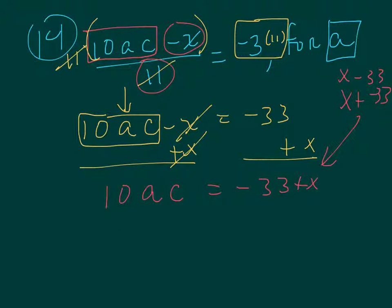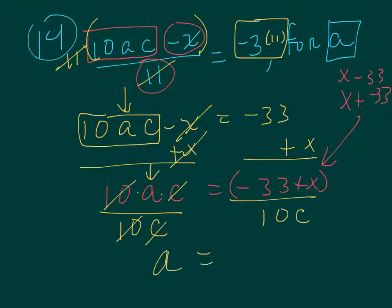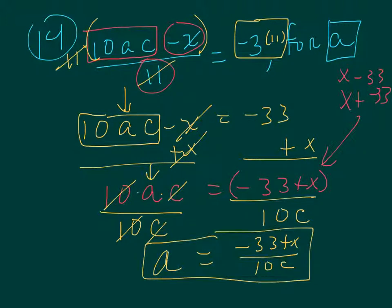All right, now this is attached, so the next thing I'm going to do is—this is multiplication—so I'm going to get a by itself by dividing by 10c. If I divide by 10c on both sides, the 10 cancels out, the c's cancel out. Notice you now have your a by itself, and you can't eliminate anything right here, so negative 33 plus x over 10c. And again in this case, c cannot be zero.